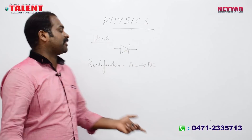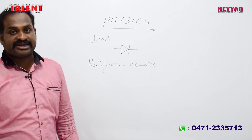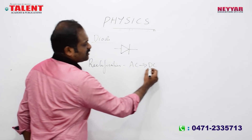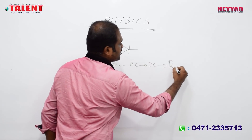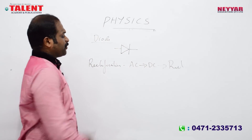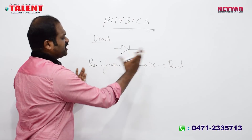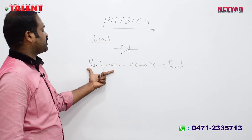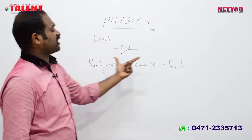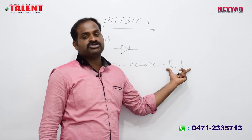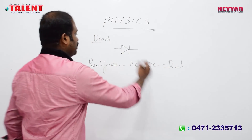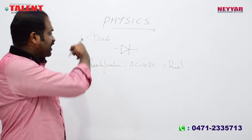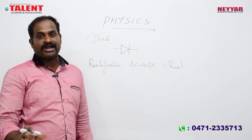Converting AC to DC is called rectification. The device that performs this is called a rectifier. The process is rectification; the device is the rectifier. The rectifier is an electronic device — the diode.